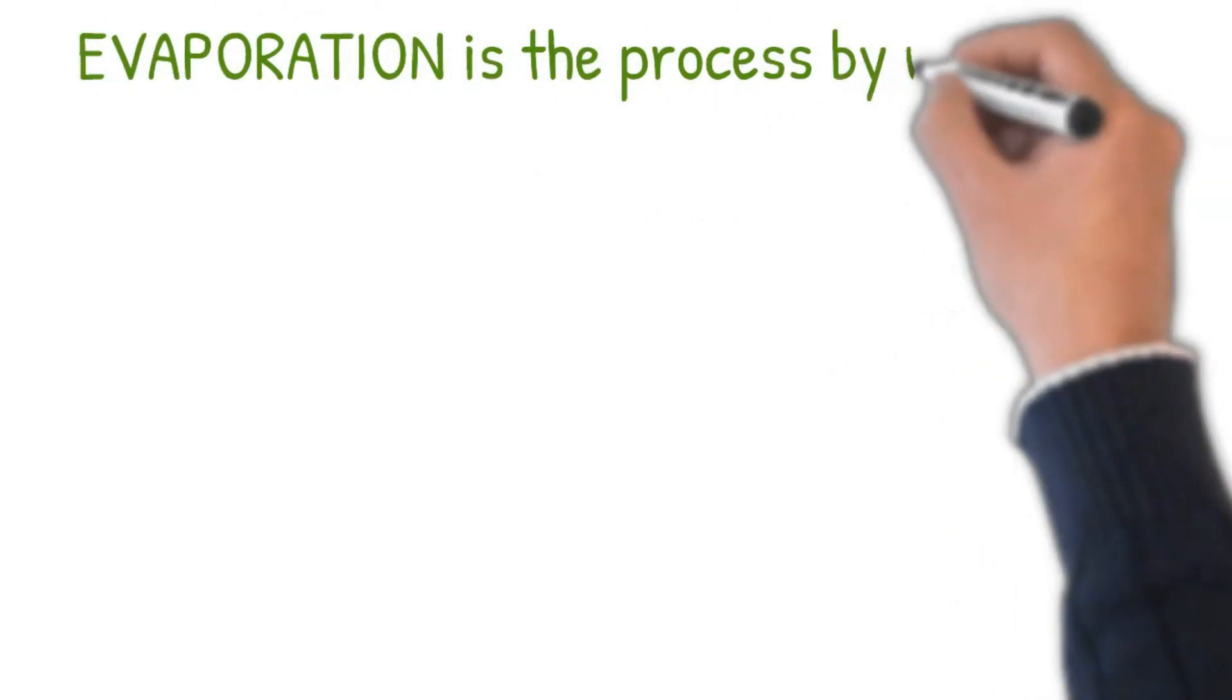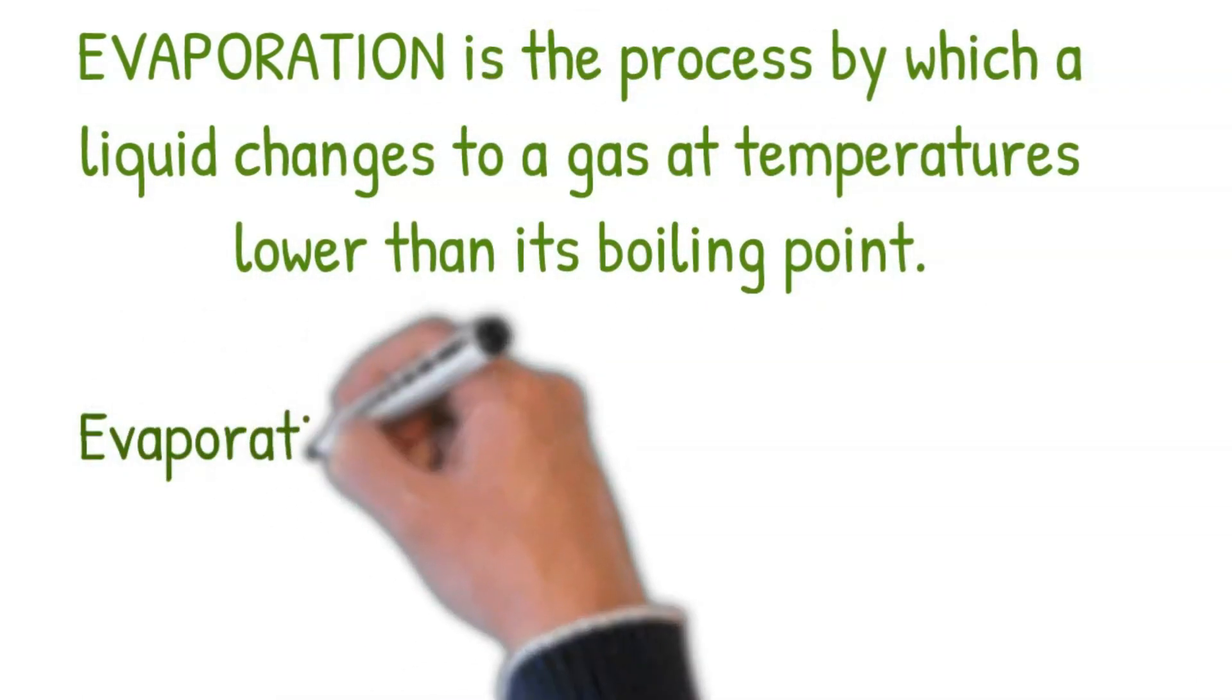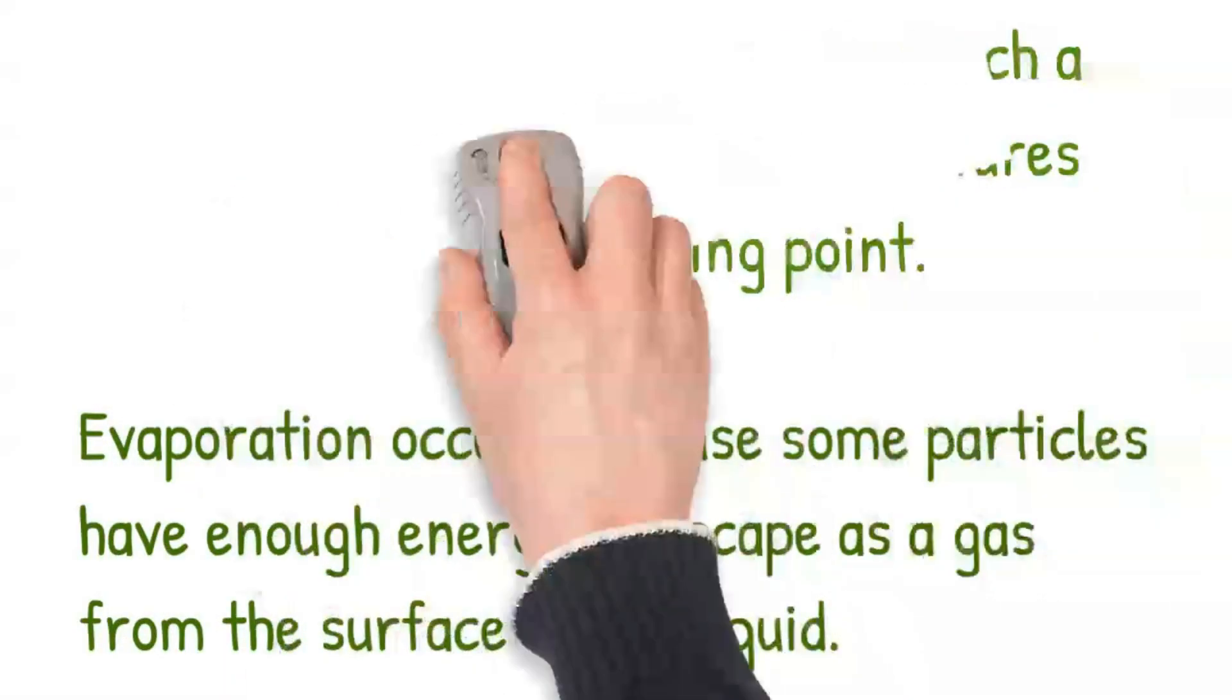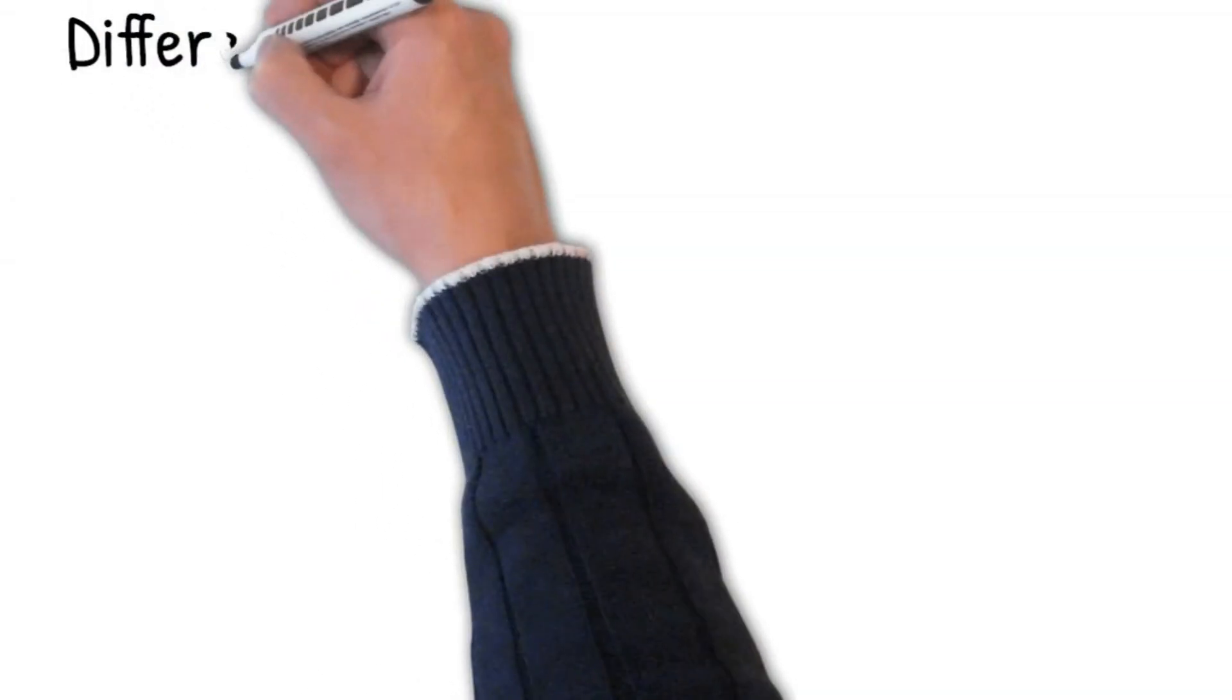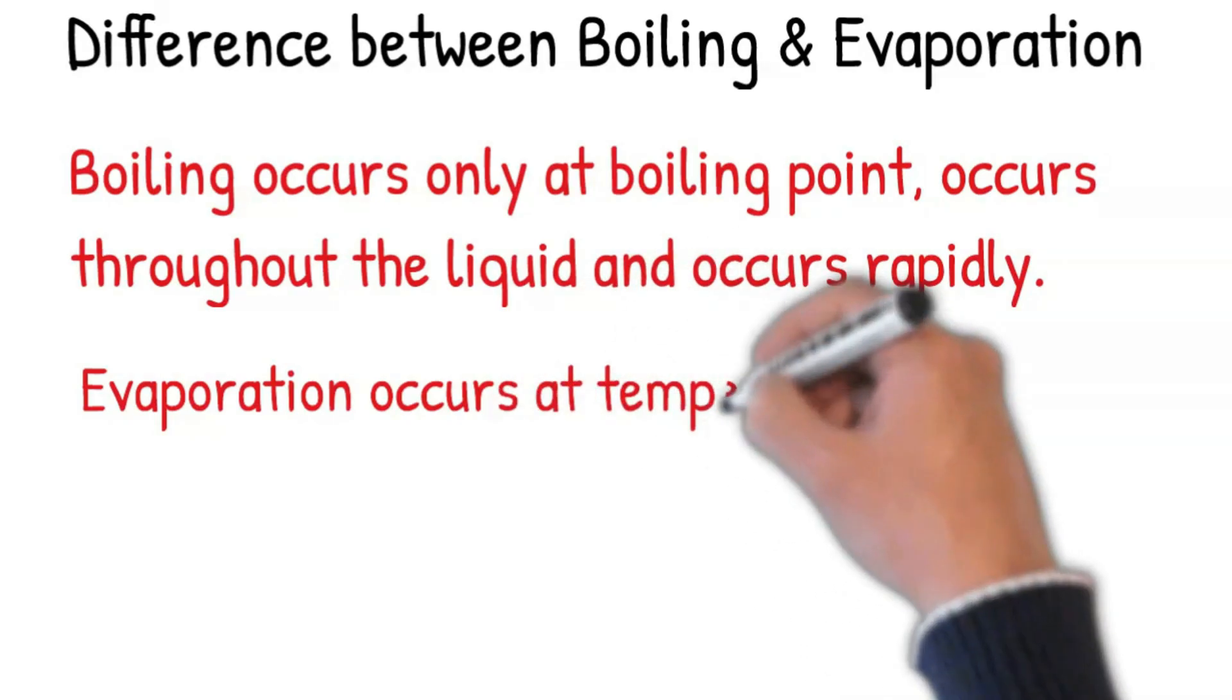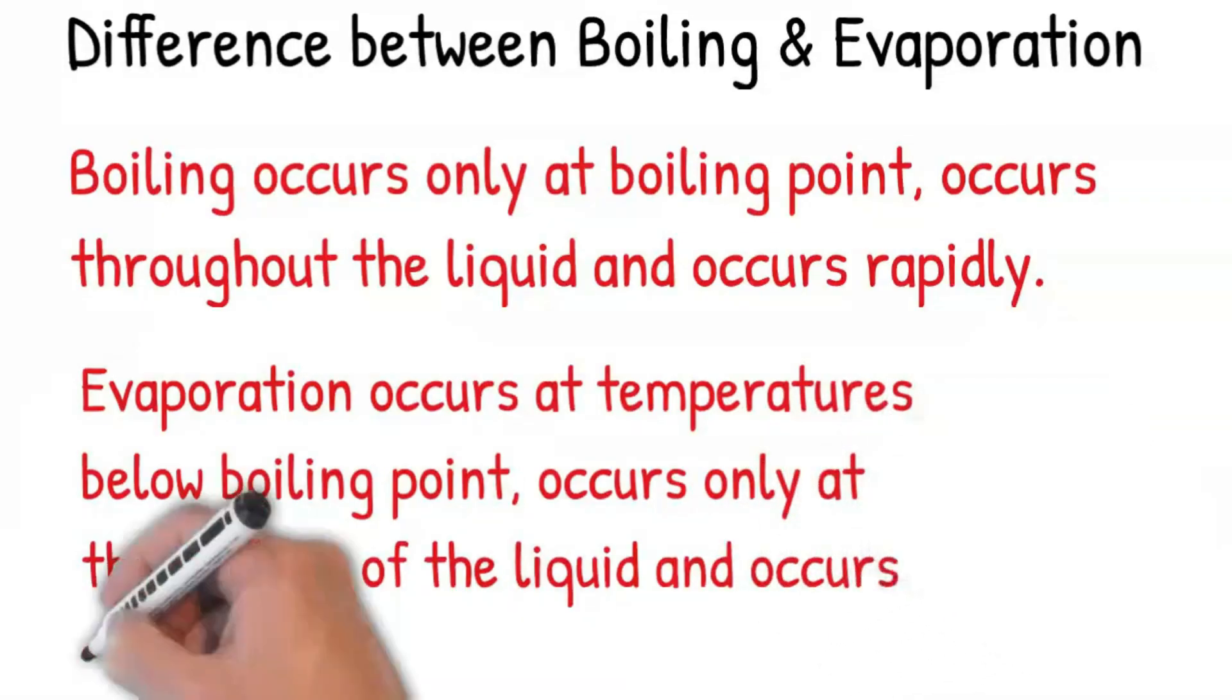Evaporation is the process by which a liquid changes to a gas at temperatures lower than its boiling point. Evaporation occurs because some particles have enough energy to escape as a gas from the surface of the liquid. It occurs at the surface of the liquid and happens slowly.